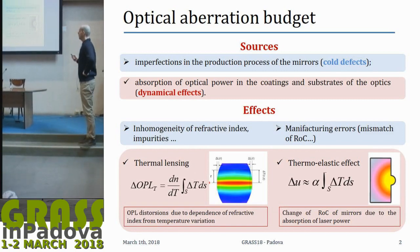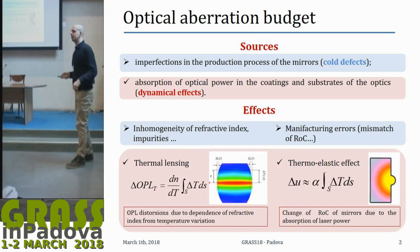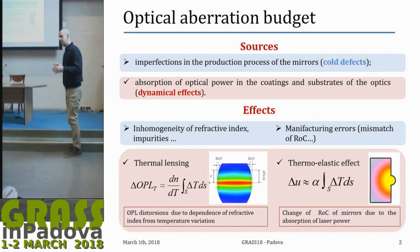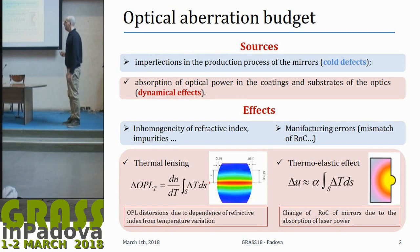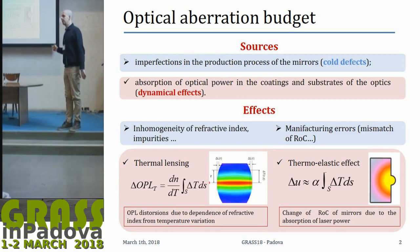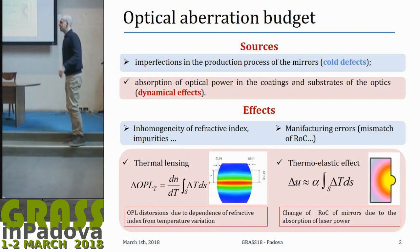The sources of aberration and the total budget for a gravitational wave interferometer are basically divided into two groups: cold effects already present in the optics, and dynamical effects triggered by the power injected in the interferometer. These are further divided into thermal lensing inside the optics — due to heating, variation of refraction index, and impurities — and thermoelastic effects, the bulge at the center of the optic due to heating. There are also manufacturing errors, like a mismatch of the radii of curvature, from the state-of-the-art production procedures.